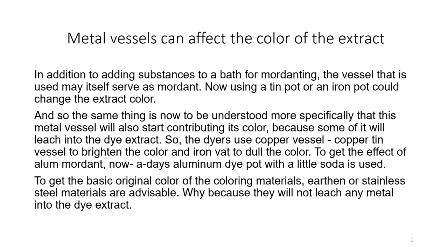Dyers use copper or copper-tin vessels to brighten the color and iron vats to dull the color. To get the effect of alum mordant, an aluminum dye pot with a little soda is used. But nowadays, with technological advancement, nobody uses these old techniques. People use well-defined recipes, and these kinds of approximations are not taken into account. To get the basic original color of the coloring matter, earthen or stainless steel materials are advised, because they will not leach any metal into the dye extract.